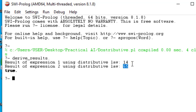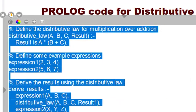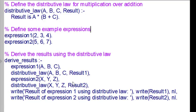The results we get are 14 and 65. For the first expression, we have 2 into (3 plus 4), which equals 2 into 3 plus 2 into 4 — that is 6 plus 8, giving 14. The second case gives 5 into 6 plus 5 into 7, which is the result for that expression. So this is how the distributive and associative laws work in Prolog. That's all for this particular session. Thanks for watching.